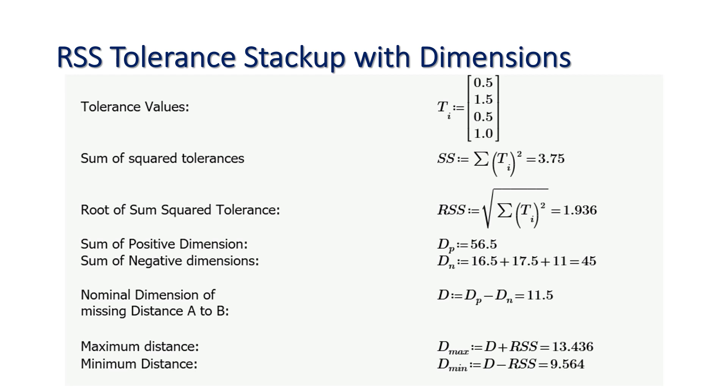From our previous case study with the worst-case tolerance stackup analysis, we have four tolerances: 0.5, 1.5, 0.5, and 1.0. If you sum up these squared tolerances, then you will get 3.75.